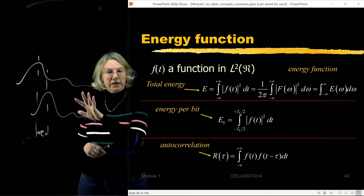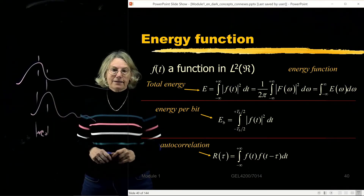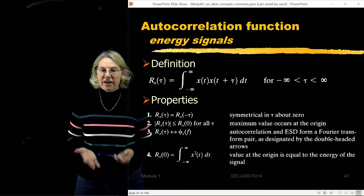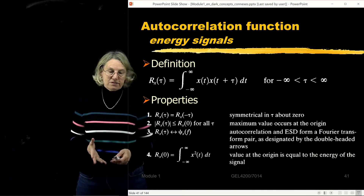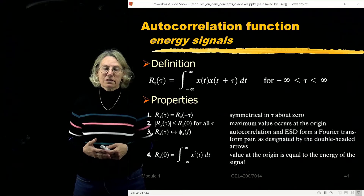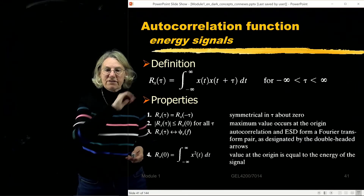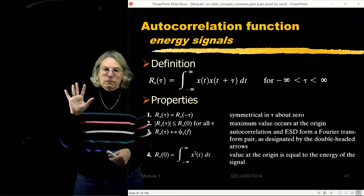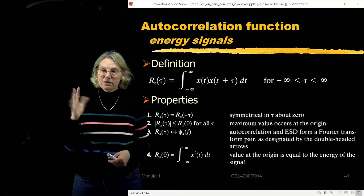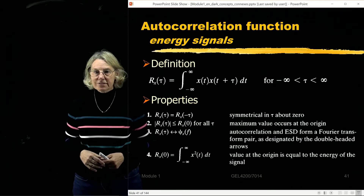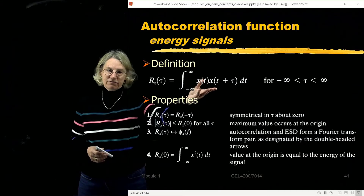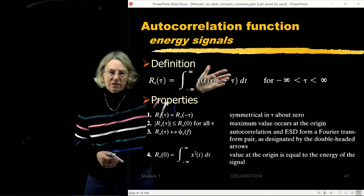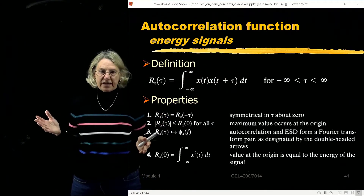It's a little different from the convolution integral — there's no flipping, just the sliding in the lag. The first property of the autocorrelation function is that it is symmetric around tau equals 0, which comes directly from the definition. If I replace tau with minus tau and change variables, I get the same exact expression.